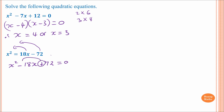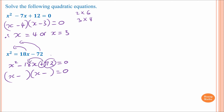This is a positive again, so we copy this side out: (x minus _)(x minus _) equals zero. Two numbers multiplied together must equal 72 and add to give 18. Nine and eight give 72 but add to 17 — not good. Trying four: 72 divided by 4 is 18, so 4 and 18 — their sum is not 18 either.